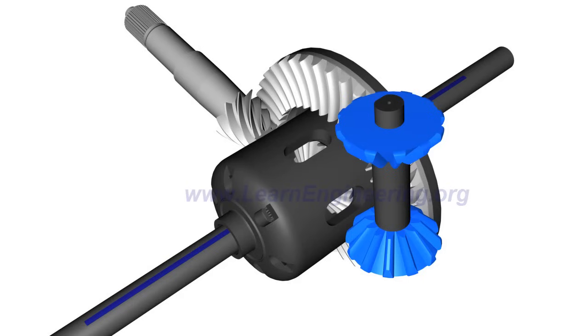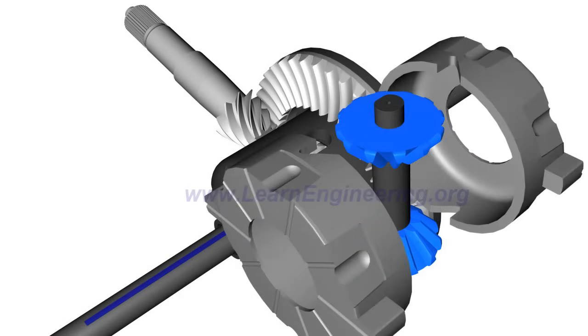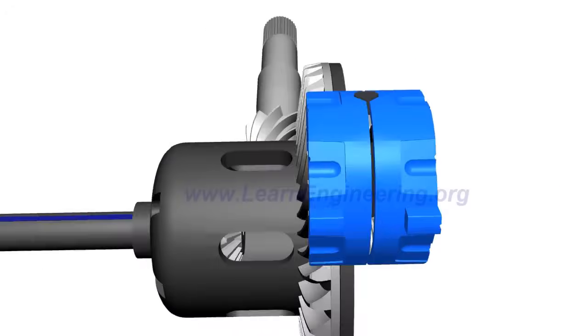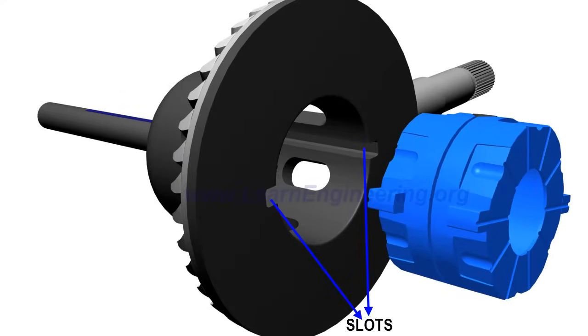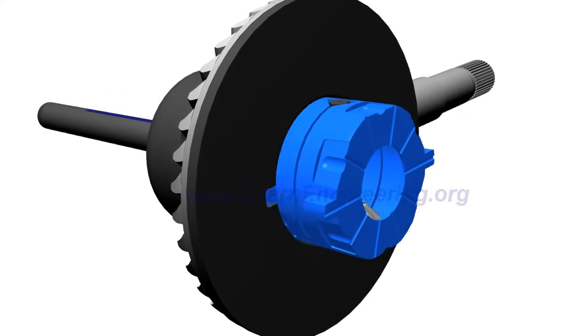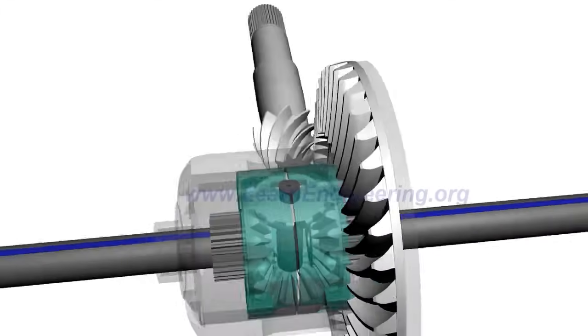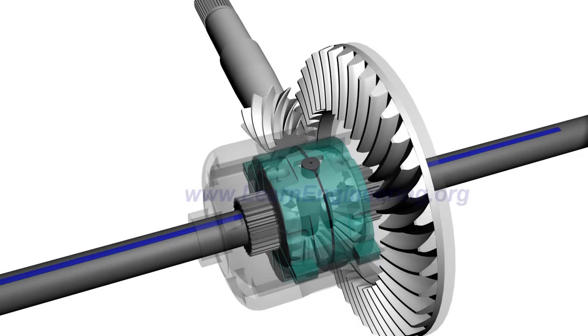Instead, the spider gears sit between a pair of pressure rings, and these pressure rings are fitted in the slots of the case. It is clear that the side gears are also well placed between the pressure rings.